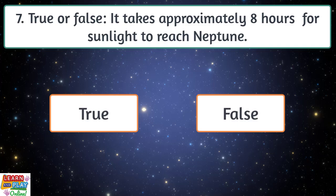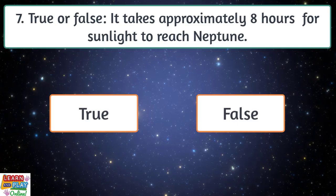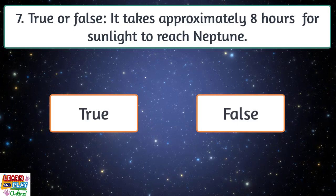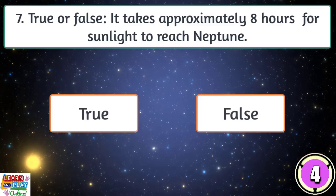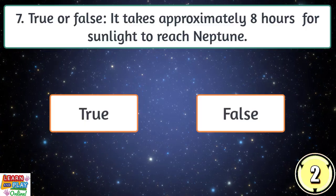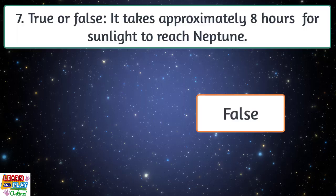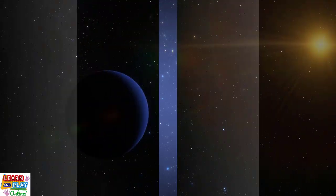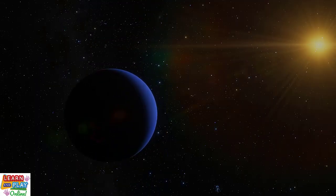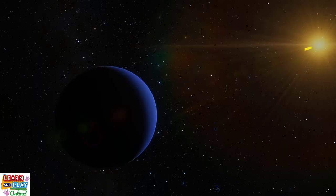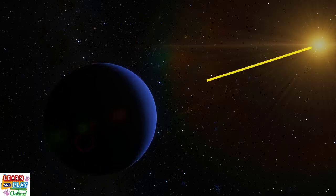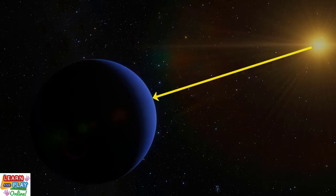Question seven. True or false? It takes approximately eight hours for sunlight to reach Neptune. While it takes just over eight minutes for sunlight to reach you on Earth, it would take just over four hours for the same sunlight to reach the surface of Neptune.